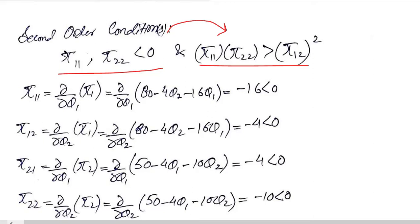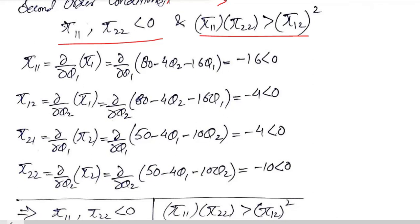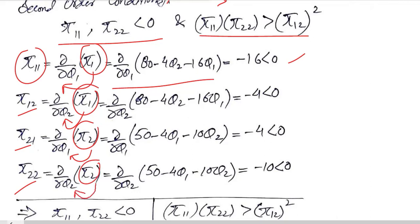So this is the calculation that we can easily do. π11 will be the derivative of π1 with respect to q1, and the answer is equal to this, which is a negative value. π12 is the derivative of π1 with respect to q2. π21 is the derivative of π2 with respect to q1, and π22 is the derivative of π2 with respect to q2.